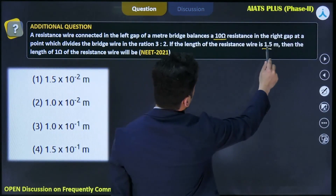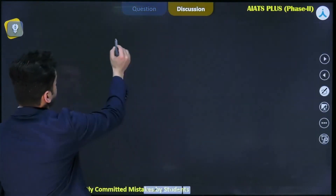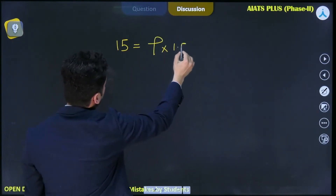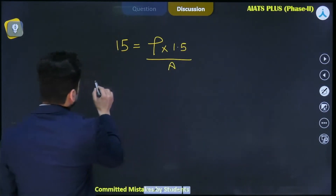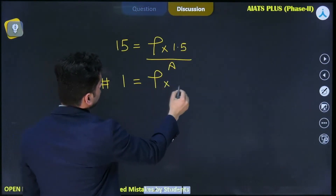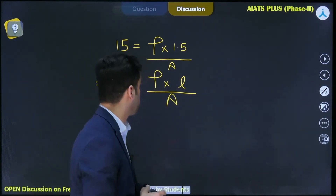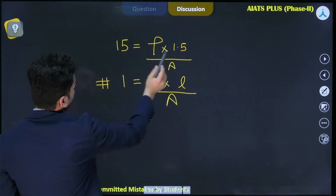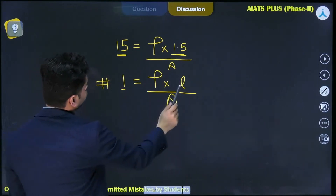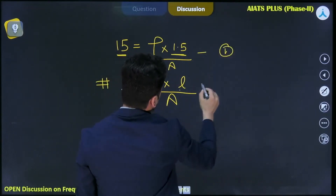The problem asks: if the total resistance wire has 15 ohm when resistivity is rho, length is 1.5 meters, and area is a — this is equation 1. For 1 ohm resistance, the resistivity is still rho, area is still a, and the length is unknown — this is equation 2. When 15 ohm corresponds to 1.5 meters length, what length corresponds to 1 ohm?